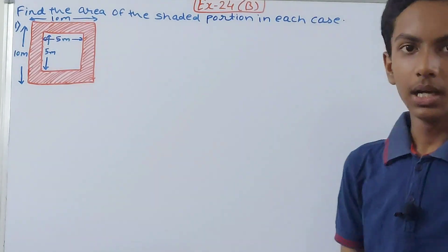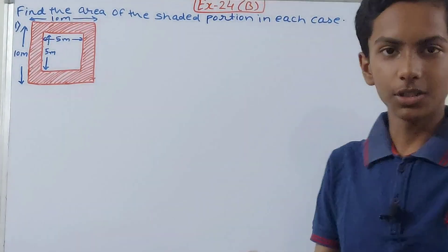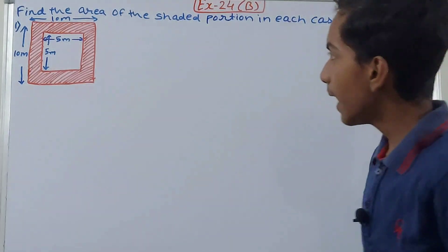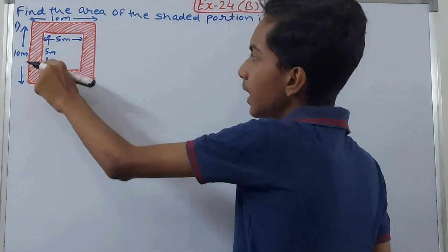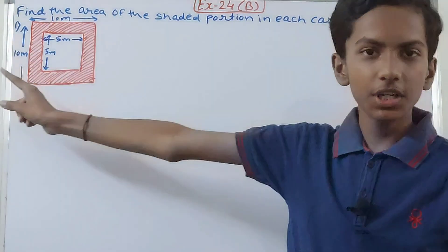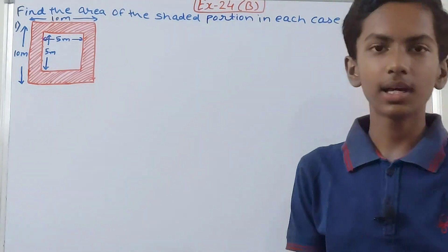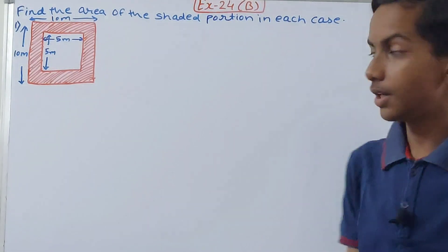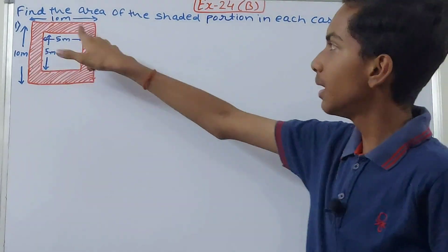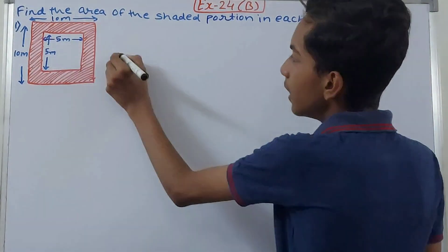To find the shaded area, first we will calculate the area of the outer square — the larger one. Then we will calculate the area of the inner square — the smaller one. Once we have both areas, we will subtract the area of the inner square from the outer square, and the remaining part will be the shaded portion.